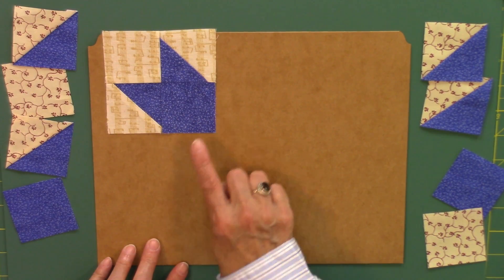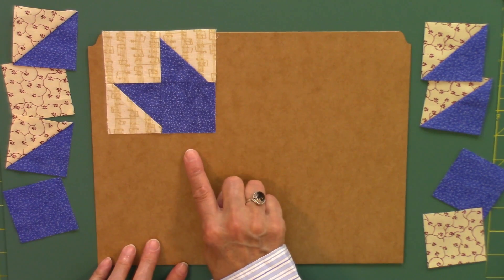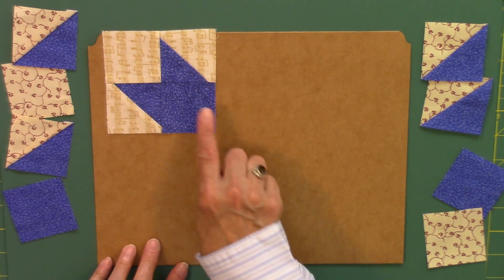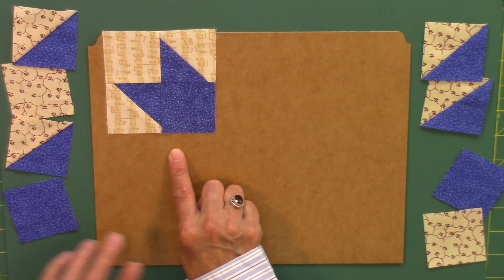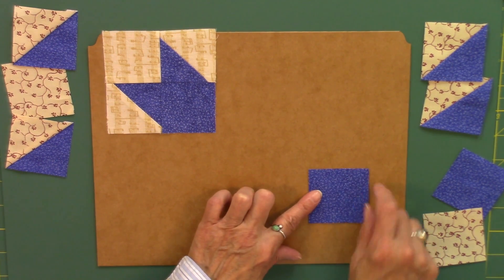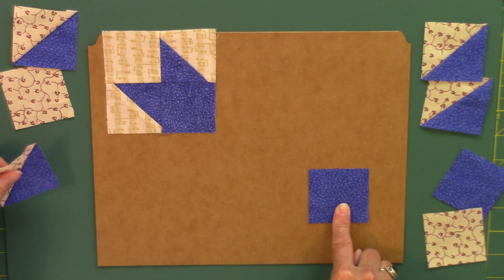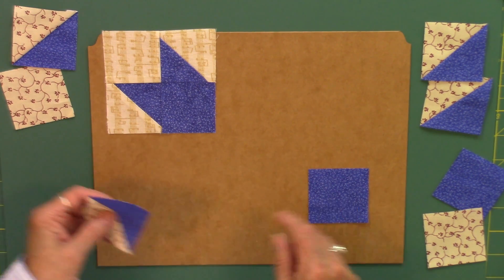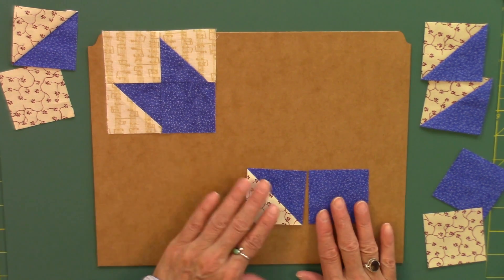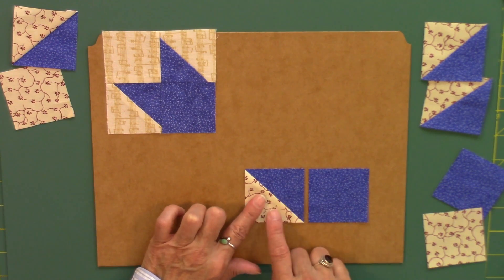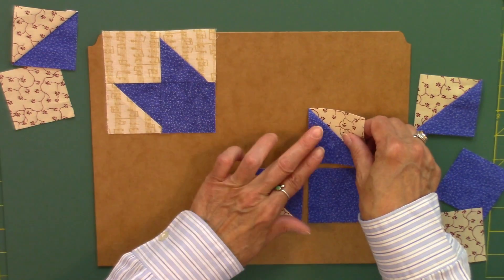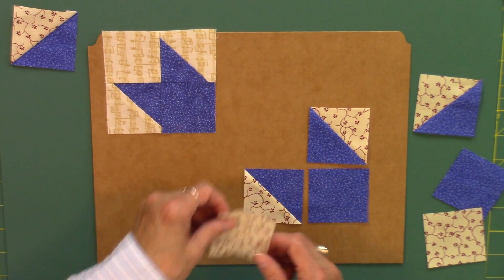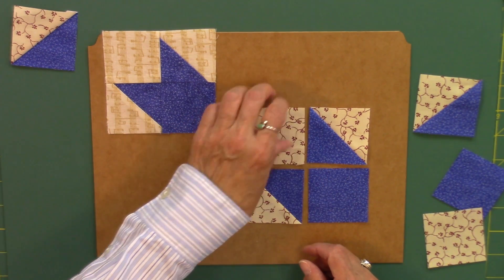When I sew the quarter star points for each of the sections of the block I lay them all out in this identical orientation. So taking one of the dark squares, placing it here, one of the pressed to the light half square triangles goes here, one that's pressed to the dark goes here, and background fabric goes there.